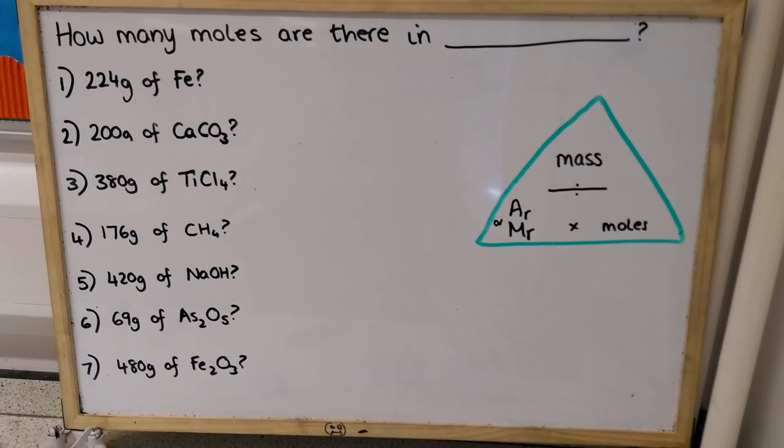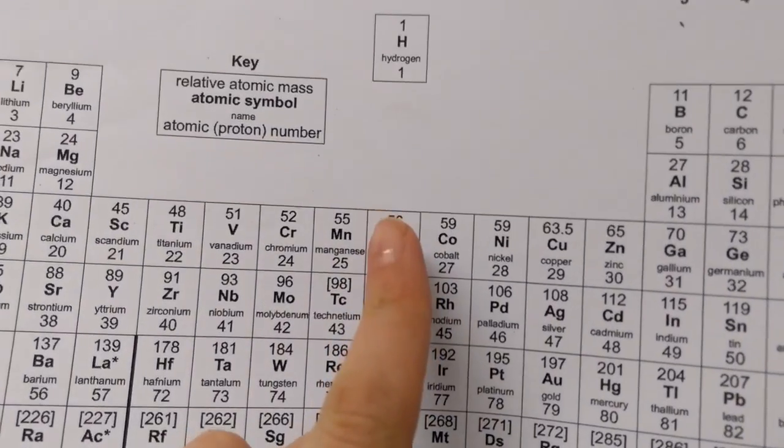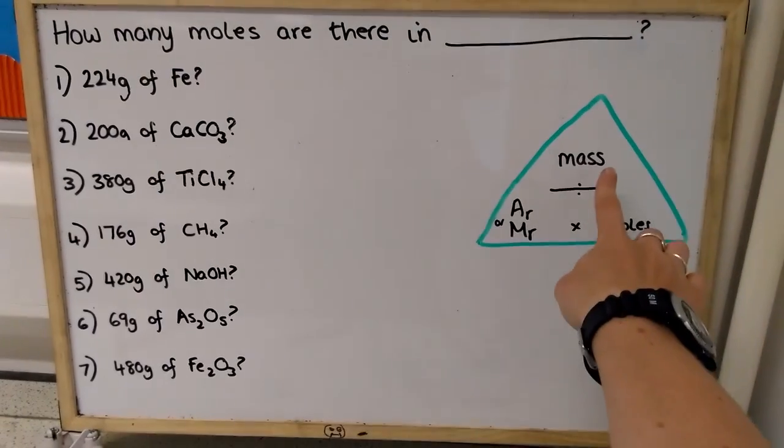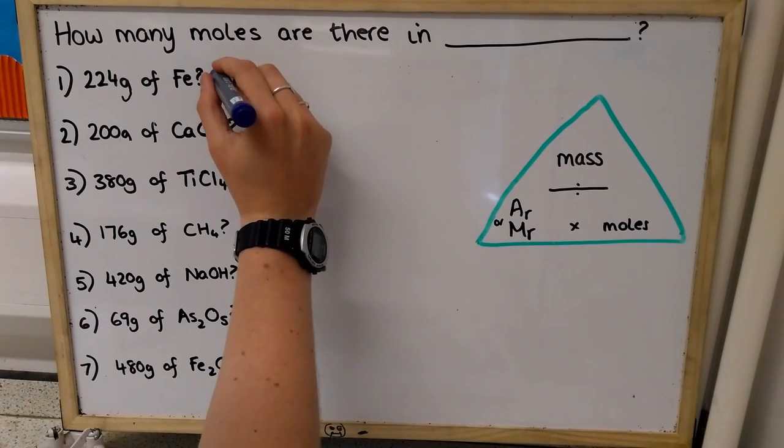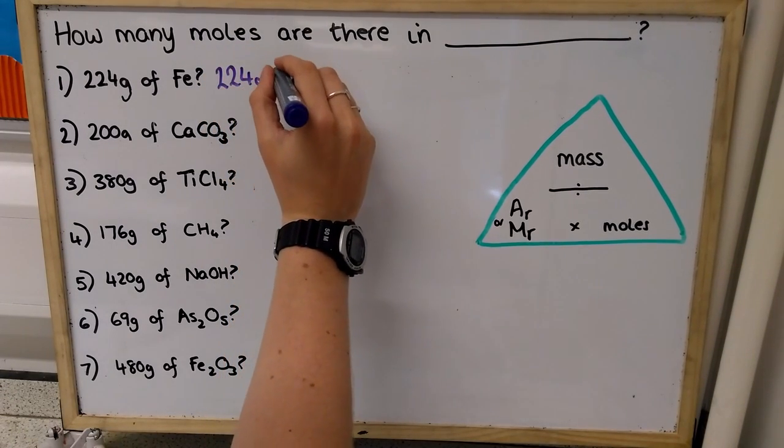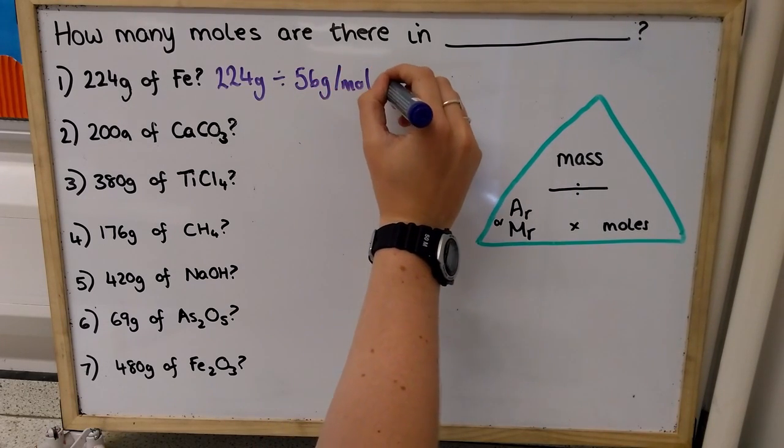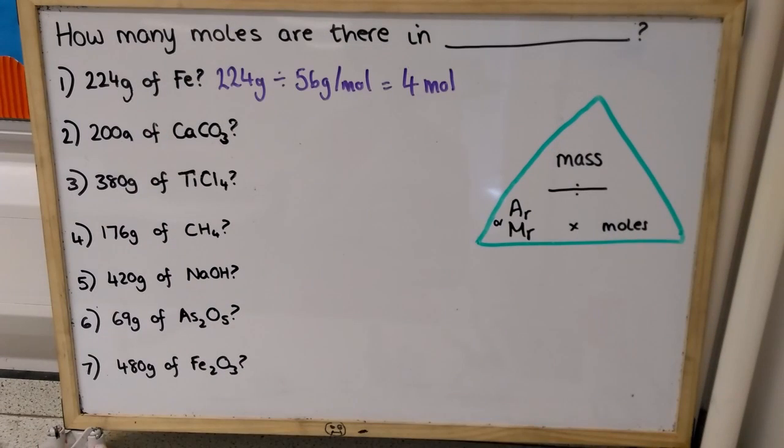So, my first one is going to be quite straightforward. I just take my periodic table, find iron, and it's here and the relative atomic mass at 556. So, mass divided by relative atomic mass gives me an answer of 4 moles, and as you can see, I've abbreviated moles to just M-O-L, which is the standard abbreviation.